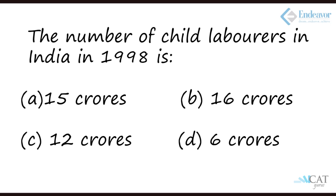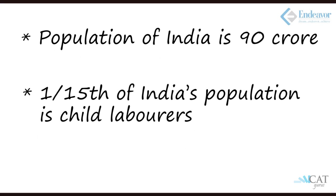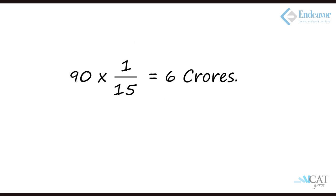Question 2: The number of child labourers in India in 1998. Looking at the bullet points, the population of India is 90 crores and one-fifteenth of India's population are child labourers. So 90 × 1/15 = 6 crores. That's the number of child labourers in India in 1998.